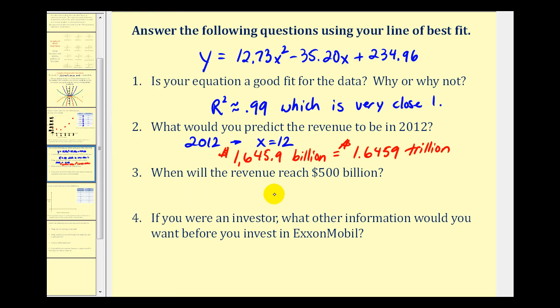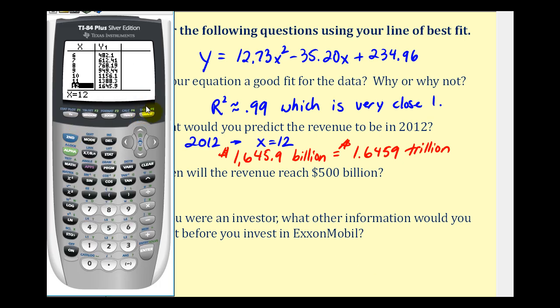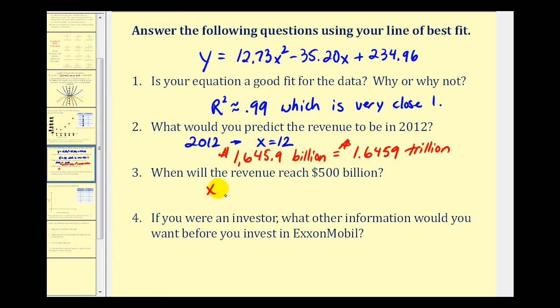Number four asks, when will the revenue reach 500 billion dollars? So they're giving us the y value and asking us to determine the x value. So let's go back to our table. And now we're going to look for a y value of approximately 500 and see what the x value would be. So at the end of the sixth year, it's not quite 500 billion dollars, but by the end of the seventh year, it's over 600 billion dollars. So revenue will reach 500 billion dollars somewhere during the seventh year. And when x equals seven, that would be the base year of 2000 plus seven, or sometime during the year 2007, revenue would reach 500 billion dollars.